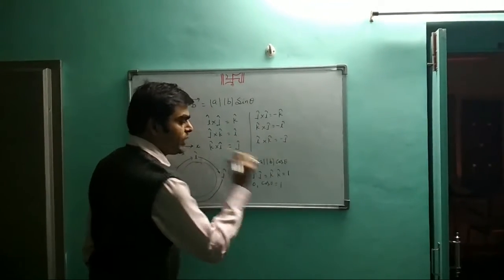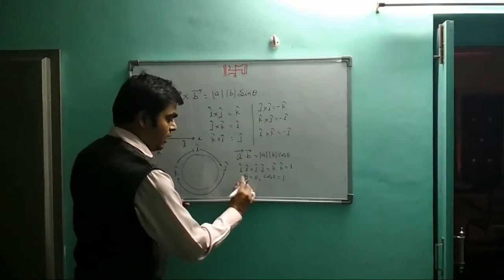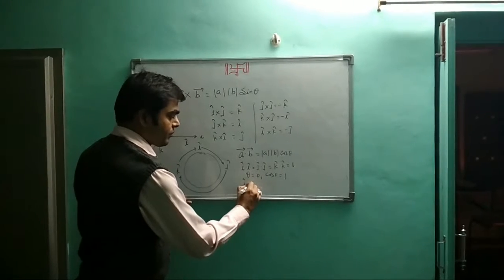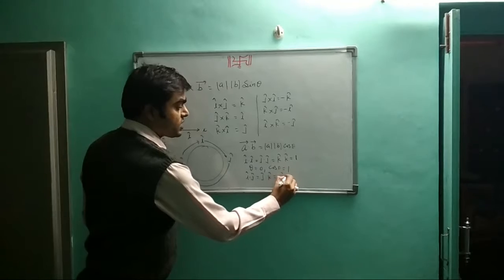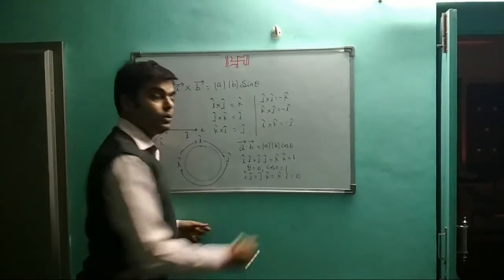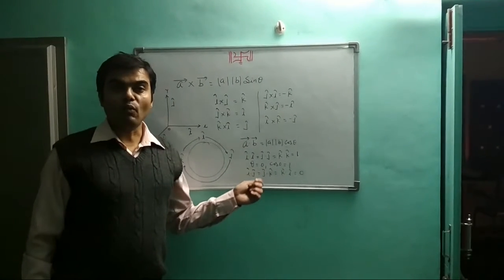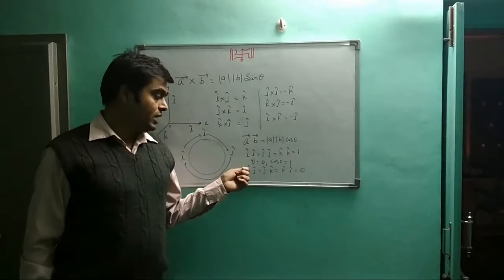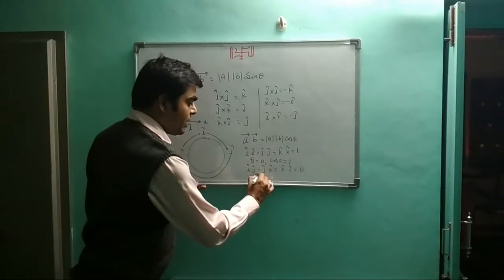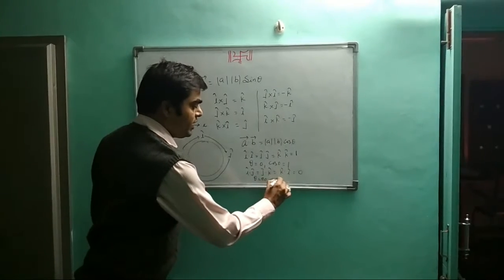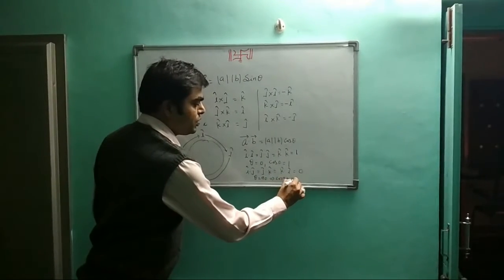And i dot j, j dot k, k dot i all equal 0. This means the axes are perpendicular directions. i cap and j cap are perpendicular, so theta equals 90 and cos 90 equals 0.